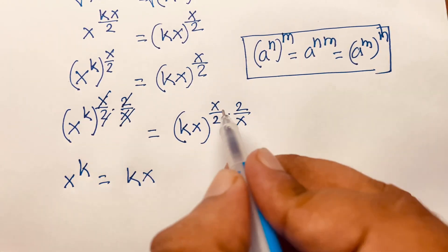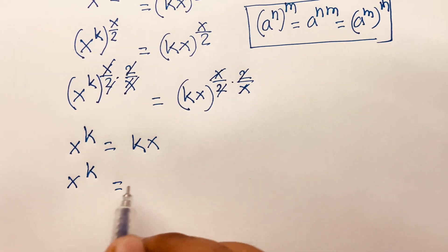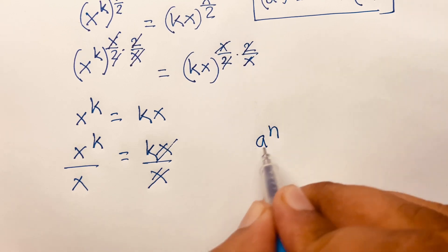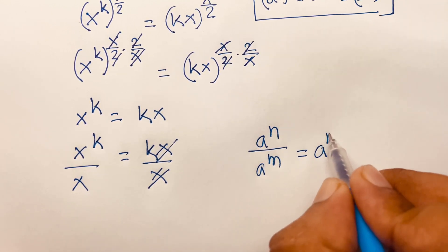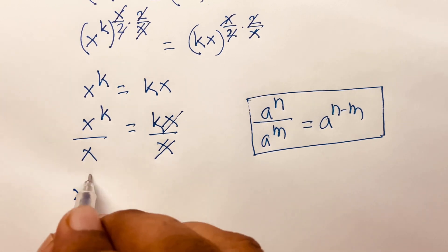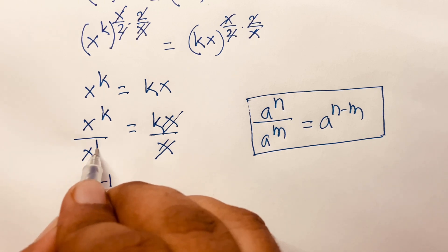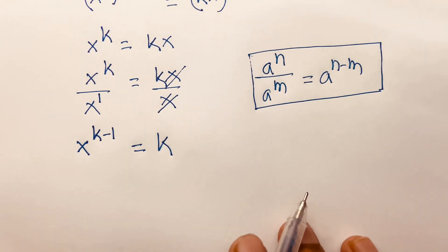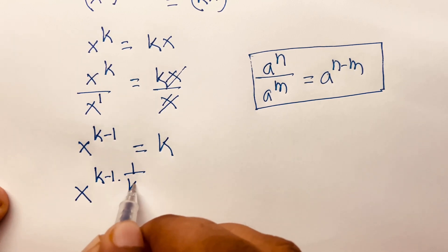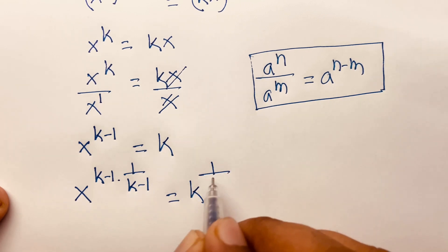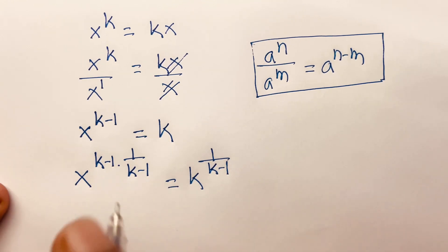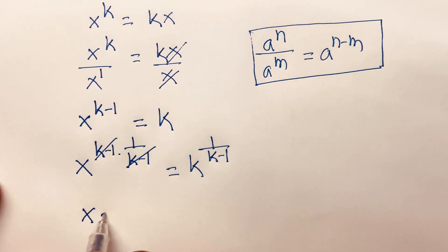So x to the power k equals kx. The x terms cancel, leaving x to the power k over x equals k. Using the rule a to the power n over a to the power m equals a to the power n minus m, I get k times x to the power k minus 1 equals k. Then x to the power k minus 1 equals 1, so raising both sides to the power 1 over k minus 1, the left side simplifies.